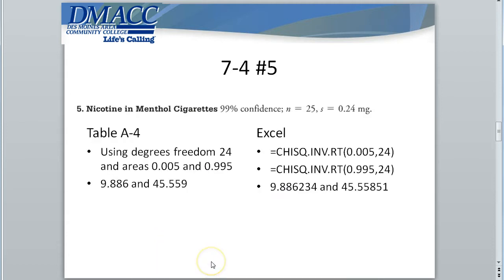So, let's compare the two values that we found. Using table A4, using degrees freedom of 24 and cumulative areas to the right of a half percent, 99.5, we get critical values of 9.886 and 45.559. Using Excel, and you can see the two functions and the values used there, we get very comparable values. I mean, they're not that far off. And the reason why is because our table had degrees freedom of 24, as well as the two cumulative areas to the right.